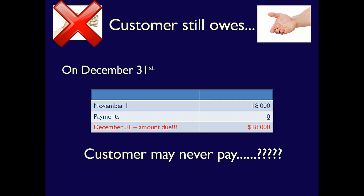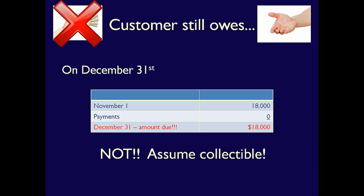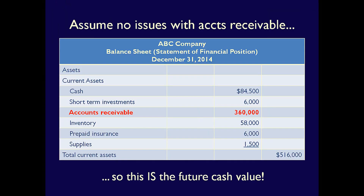What should be done about this customer? Well, depending on how sure we are that we'll never get paid, we might write off the accounts receivable. But what if we're uncertain? What if we think the customer may pay next year? That would mean that at December 31st, 2014, this is actually a good accounts receivable — it's still collectible. In that case, we would not write off the customer; we'd keep that amount as part of our outstanding accounts receivable at year-end.